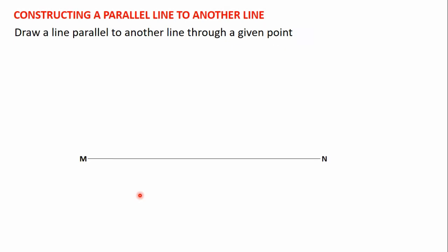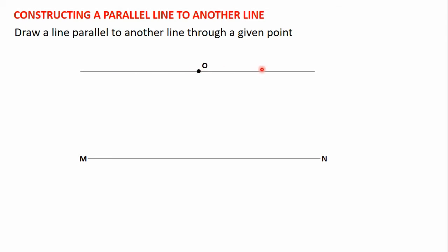For example, let's say that we have the line MN here and there is point O which falls outside the line MN. We are going to learn how to draw a line through point O such that that line will be parallel to the line MN. Let's learn how to do that by considering this example.